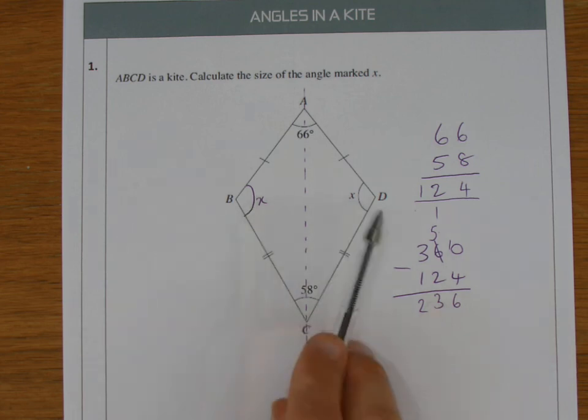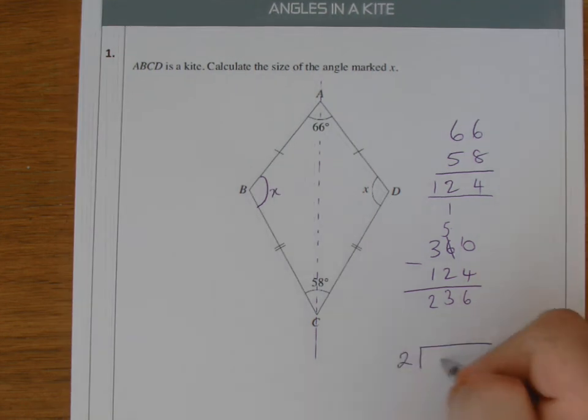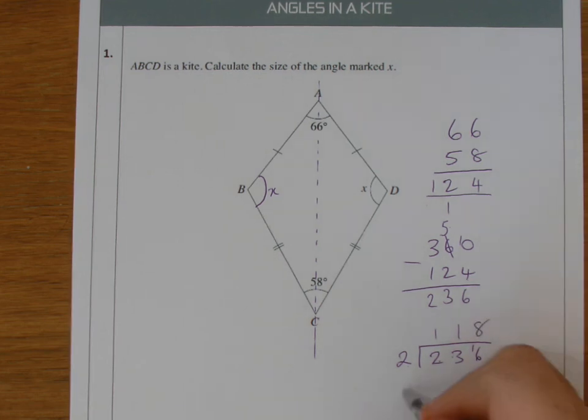So of course then you just need to split this into 2. You just need to divide that by 2, and we will get our X. 2 into 2 goes once, 2 into 3 goes once remainder 1, and 2 into 16 goes 8 times. So X is 118 degrees.